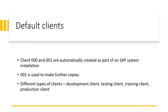Default clients. When an SAP system is installed, clients 000 and 001 are automatically created as part of the installation process. Client 000 is known as the golden client or master client — usually changes are not allowed on client 000 and it is only used for reference purposes. Client 001 is a copy of the golden client 000, so you can use client 001 to make further copies to satisfy your requirements.